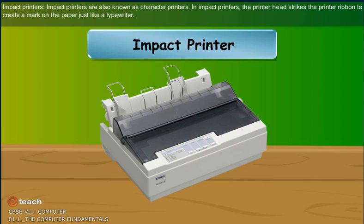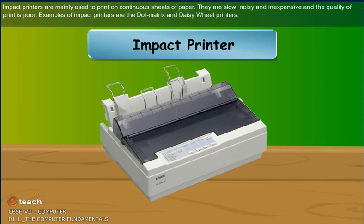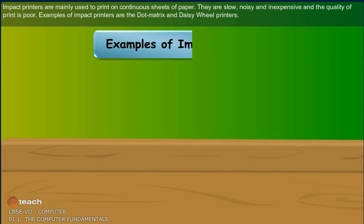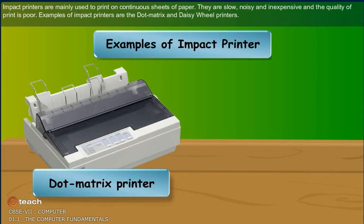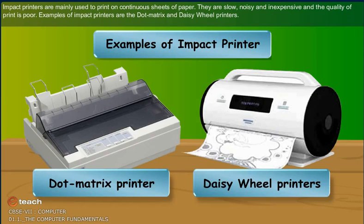In impact printers, the printer head strikes the printer ribbon to create a mark on the paper just like a typewriter. Impact printers are mainly used to print on continuous sheets of paper. They are slow, noisy and inexpensive and the quality of print is poor. Examples of impact printers are the dot matrix and daisy wheel printers.